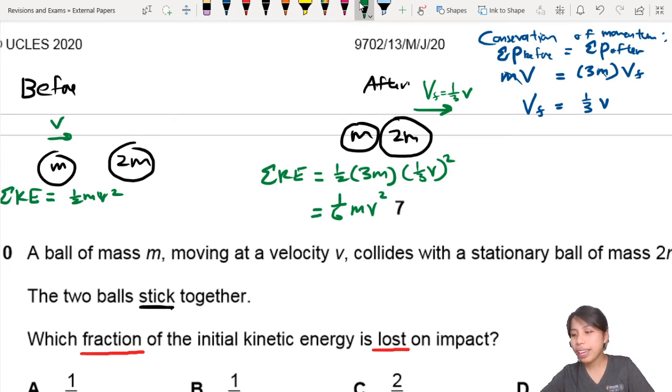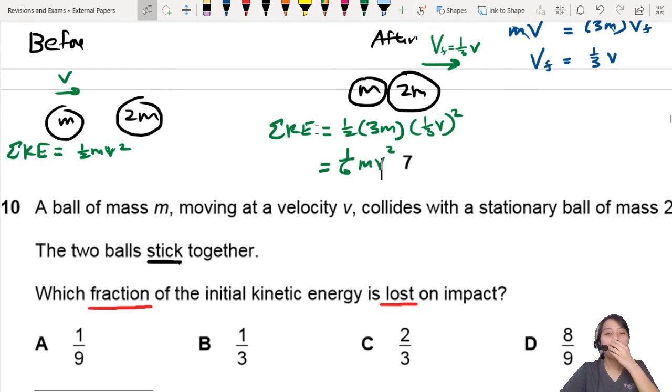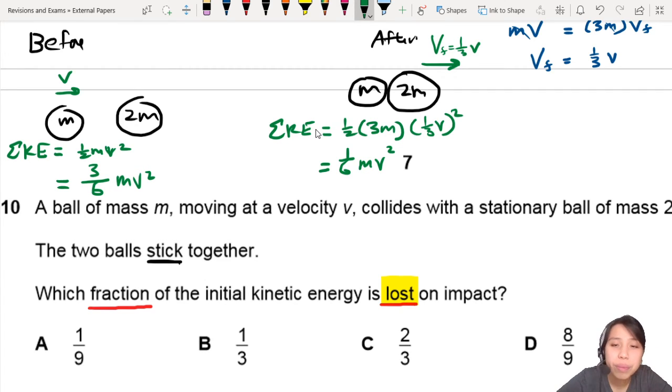Now, you might be very happy and like, yay, we have solved the question. No, we are not done yet. We are only halfway there, my friend. So don't happily go and start choosing answers. We are only halfway there. So the first thing you need to know is you want kinetic energy lost. You notice the kinetic energy before is larger than kinetic energy after. If I change them to the same denominator, this would be 3 over 6 MV squared. And it drops down to 1 over 6. What does that mean? So part 2.